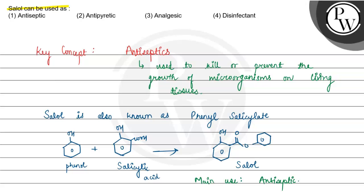Looking at the options: the first option is antiseptic. The second option is antipyretic — antipyretics are drugs that bring down fever. Analgesics are used for pain relief. Disinfectants are similar to antiseptics but are used on non-living tissues. So the final answer is antiseptic. Hope you understood it well — best of luck!